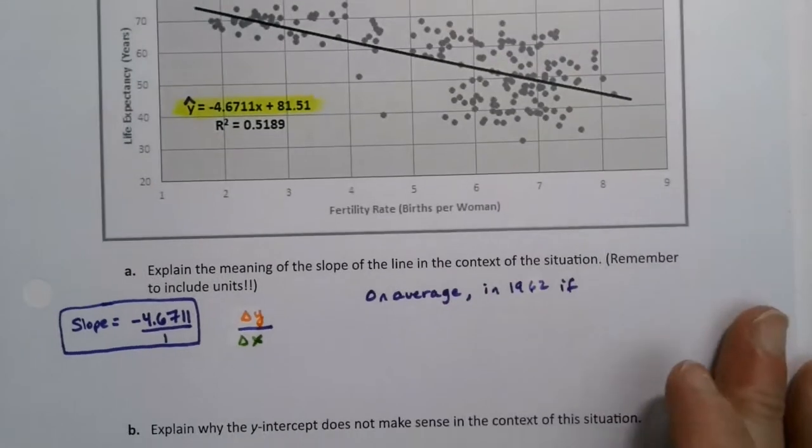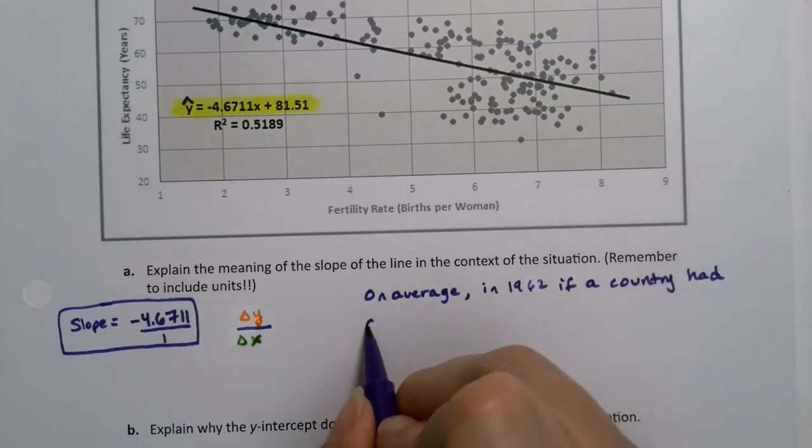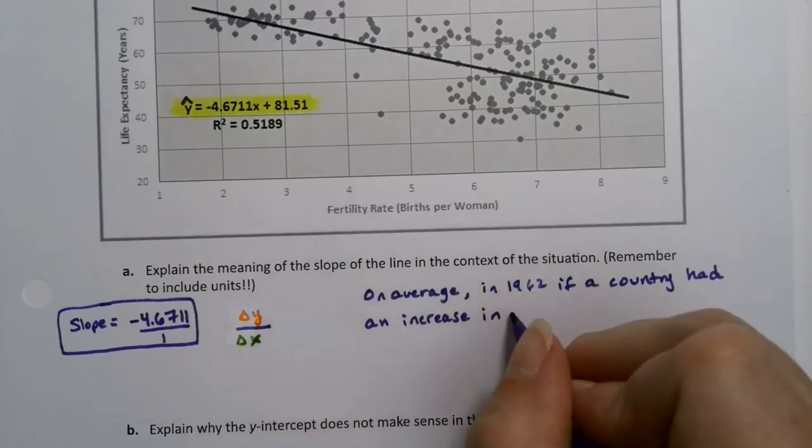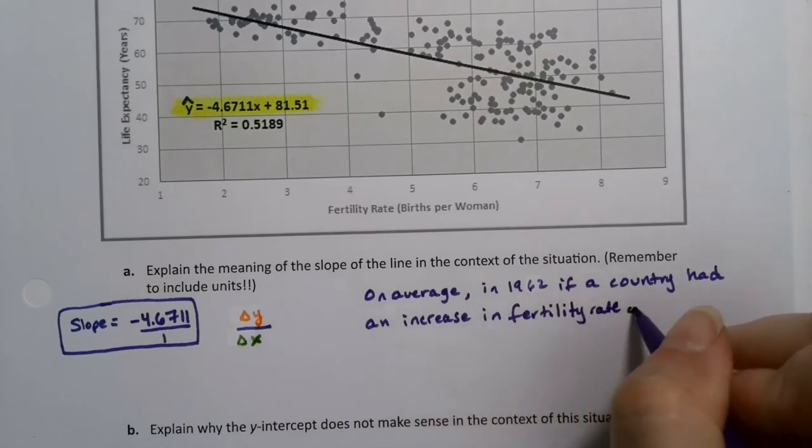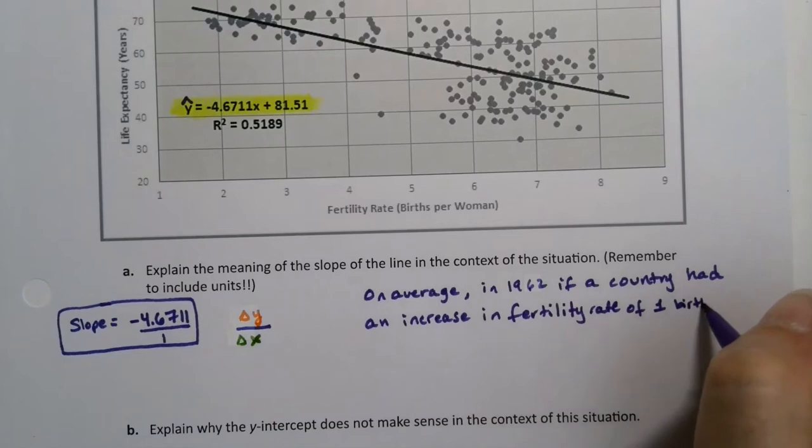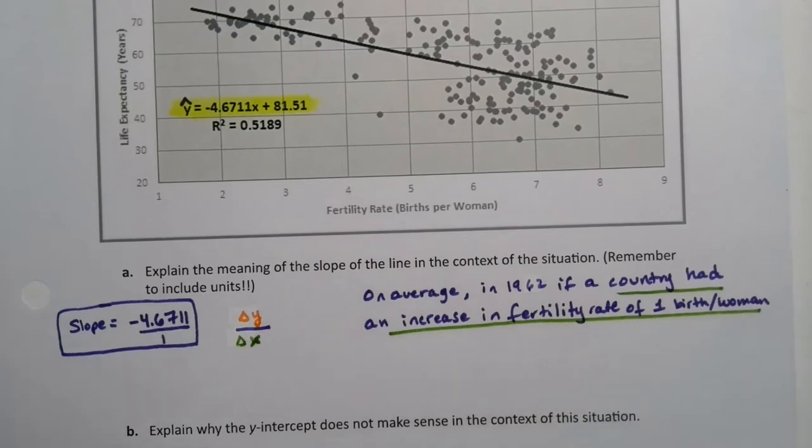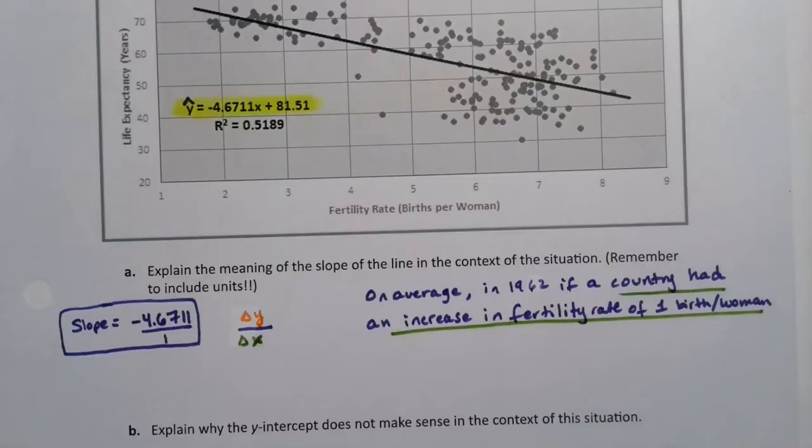So if a country had an increase in the fertility rate of 1 birth per woman. That's the unit, birth per woman. So all of that is the x. I'm saying, if a country had an increase in the fertility rate of 1. So let me read the script again. If x increases by 1. So if the fertility rate of a country increases by 1, that's essentially what I'm saying. And you could write it that way.